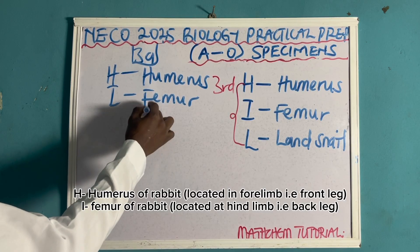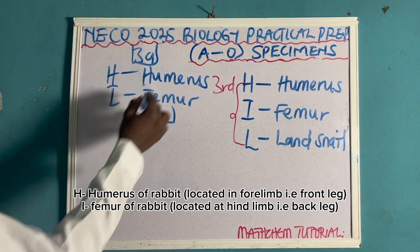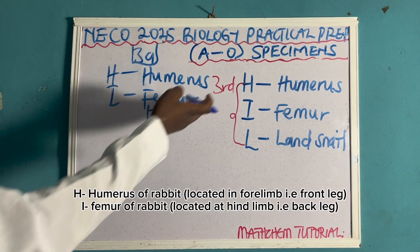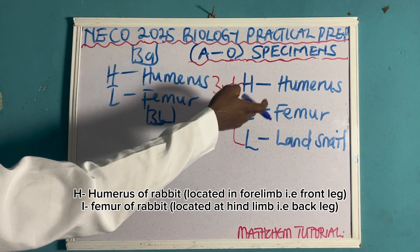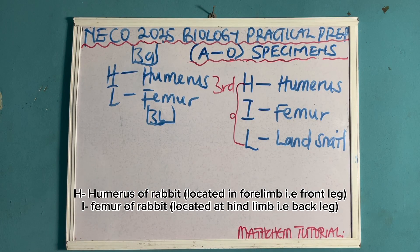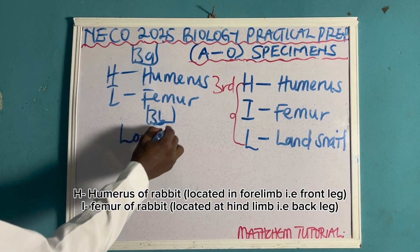Question 3B: they can ask you to state the type of bones that specimens H and I are — that is, the humerus and the femur. The type of bone they are is long bone.